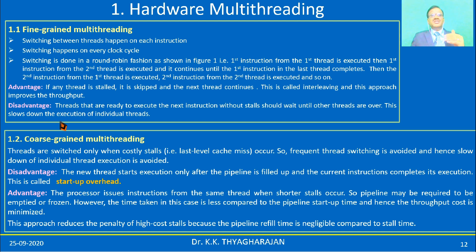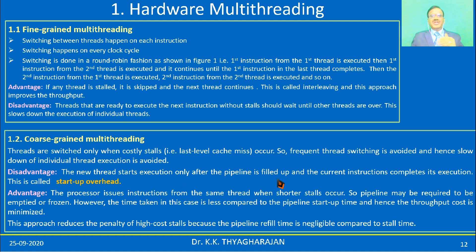The main disadvantage of fine-grained multithreading is that when threads are ready to execute the next instruction without any stall, they must wait until other threads complete, which slows down individual thread execution. To avoid this, coarse-grained multithreading is used. In this case, threads are switched only when costly stalls occur, so switching on every instruction is avoided, and the slowdown of individual thread execution is prevented. The new thread starts only after the pipeline is filled up, and the current instruction completes its execution — this delay is called startup overhead.